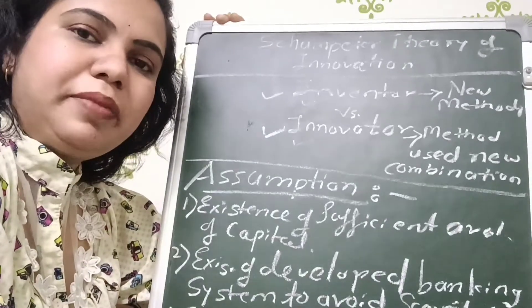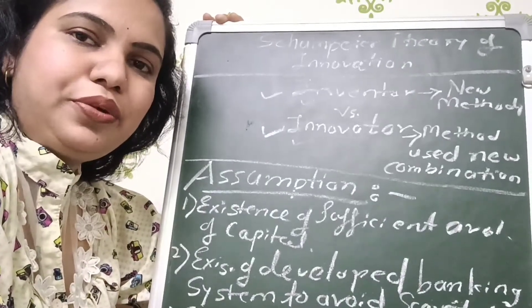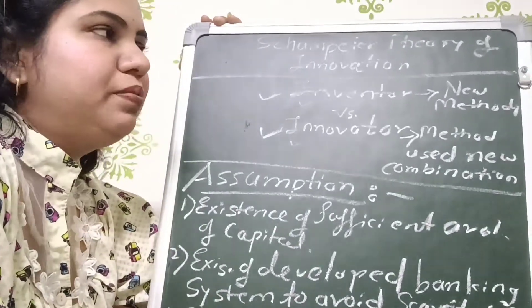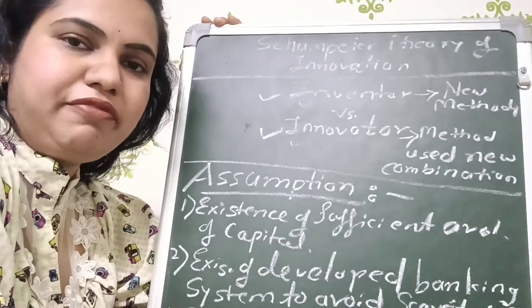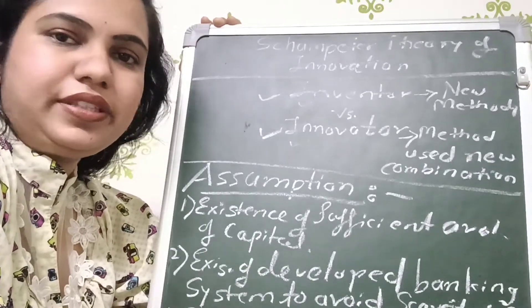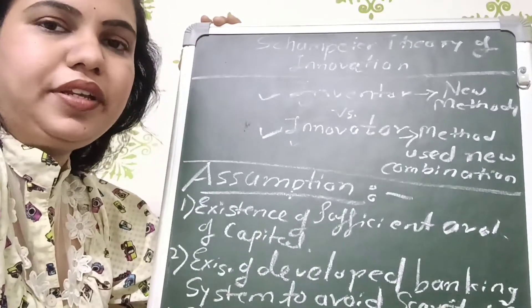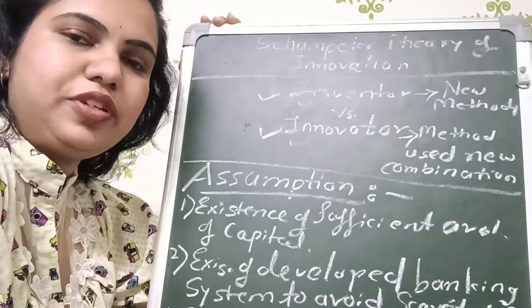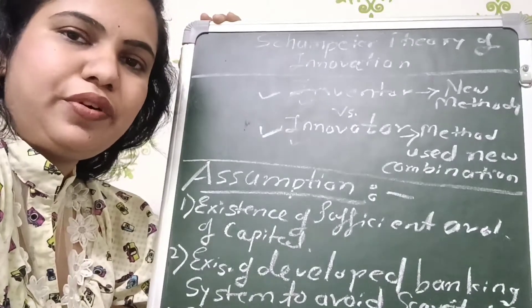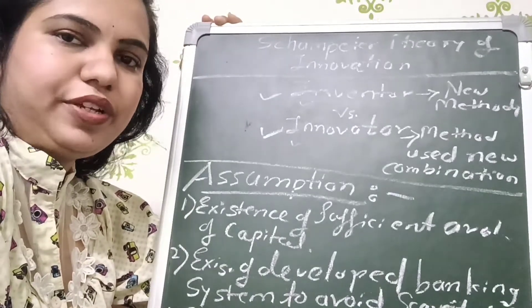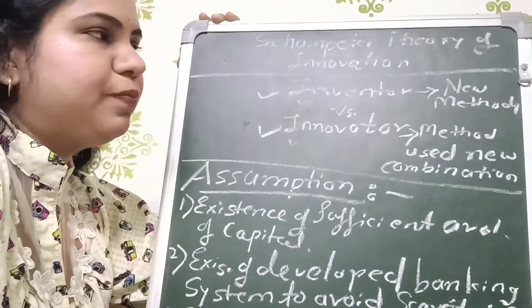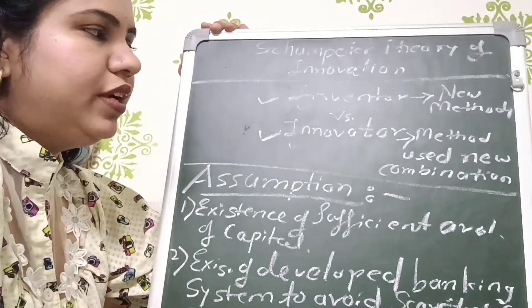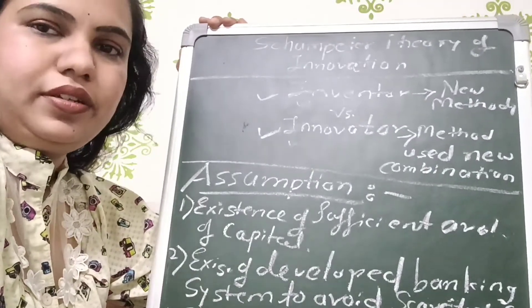Hello everyone, welcome back to Economic Decode. Yesterday we had seen the Schumpeter theory introduction part and five categories that Schumpeter explained about why invention and innovation is required for the manufacturing process. Now we will see the difference between inventor and innovator.